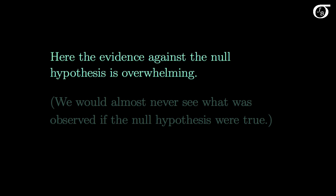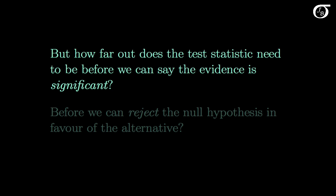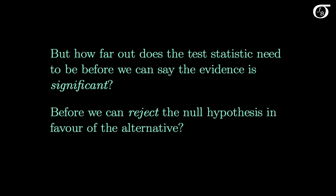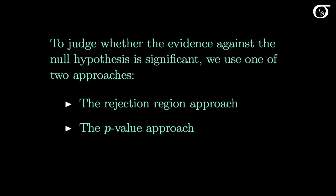Here the evidence against the null hypothesis is overwhelming — we would almost never see what was observed if the null hypothesis were true. But it's not always that obvious. How far out does the test statistic need to be before we can say the evidence is significant and reject the null hypothesis? To judge whether evidence against the null hypothesis is significant, we use one of two approaches: the rejection region approach or the p-value approach. I have a strong preference for the p-value approach, and I look at both in separate videos.